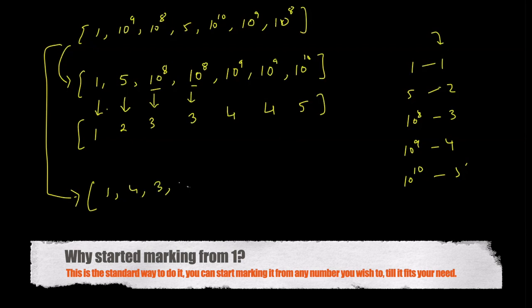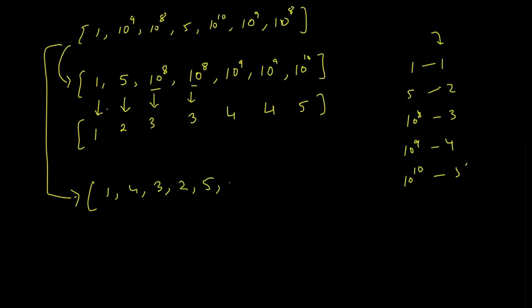5 means 2, 10 to the power 10 means 5, 10 to the power 9 means 4, 10 to the power 8 means 3. So what we did is we compressed the coordinates.